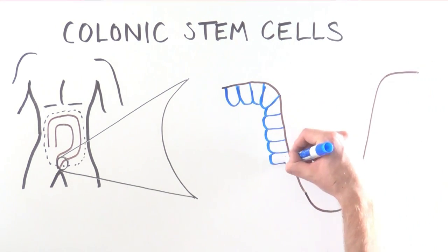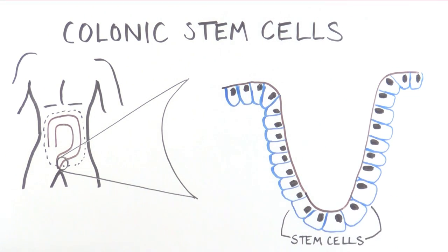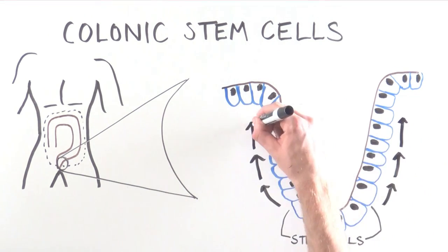In this depiction of our colon, the colonic stem cells are located at the base. The stem cells will divide and produce cells that will move up until they slough off at the top.